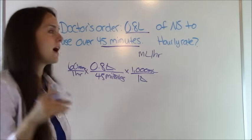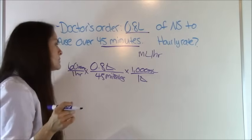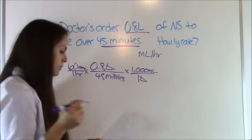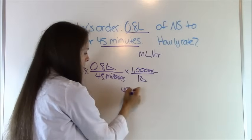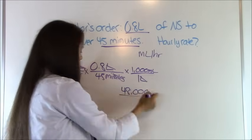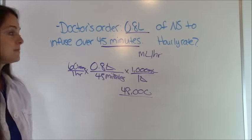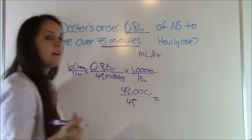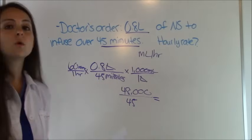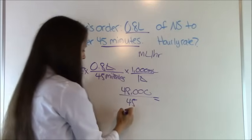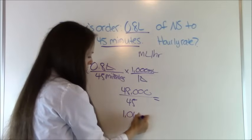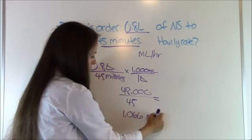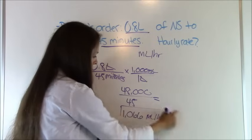Let's multiply everything at the top and bottom and divide. So 60 times 0.8 times a thousand equals 48,000. And 1 times 45 times 1 equals 45. And 48,000 divided by 45 equals 1,066. So we would set our rate at 1,066 mils per hour to get that fluid in and that is our answer.